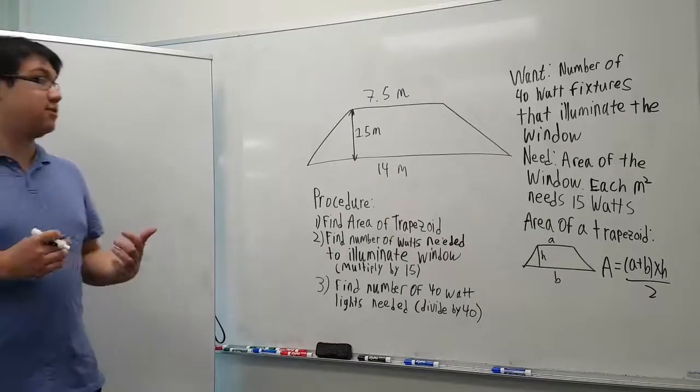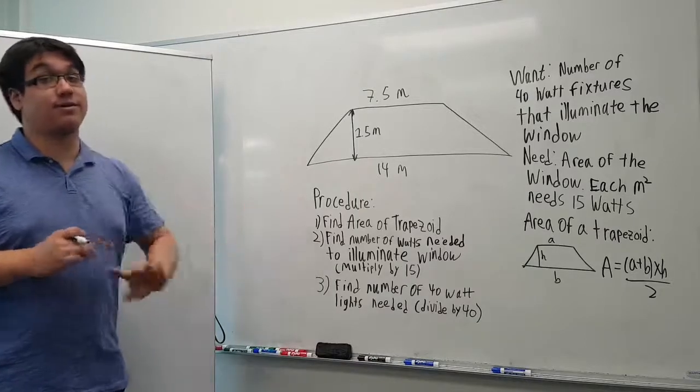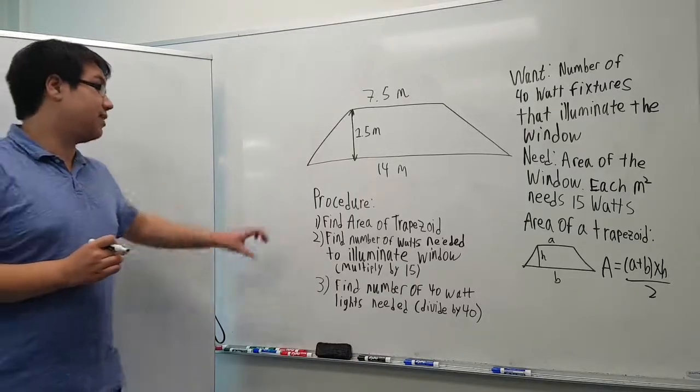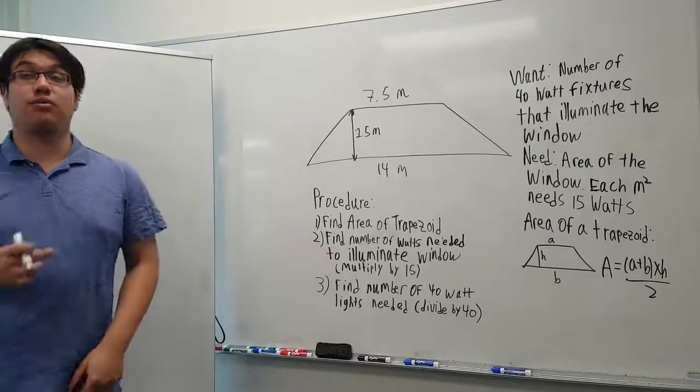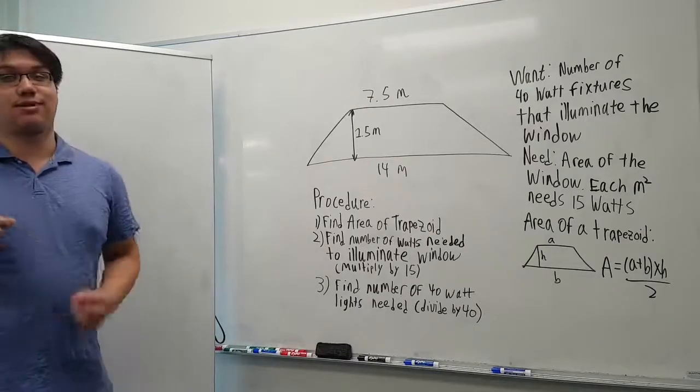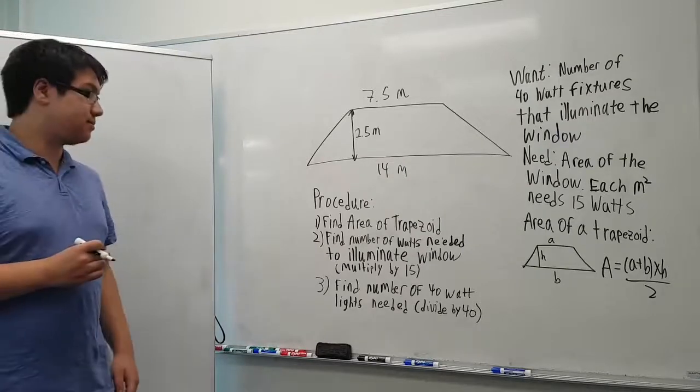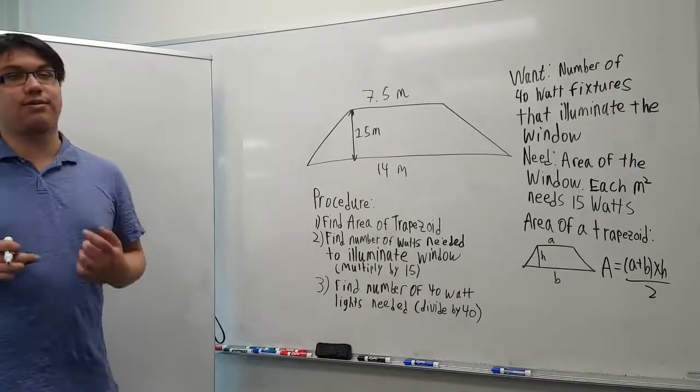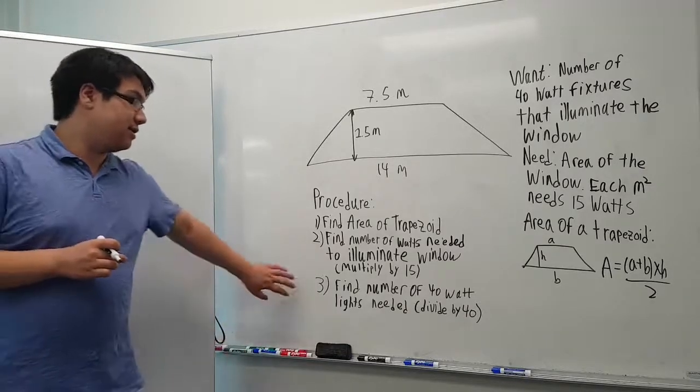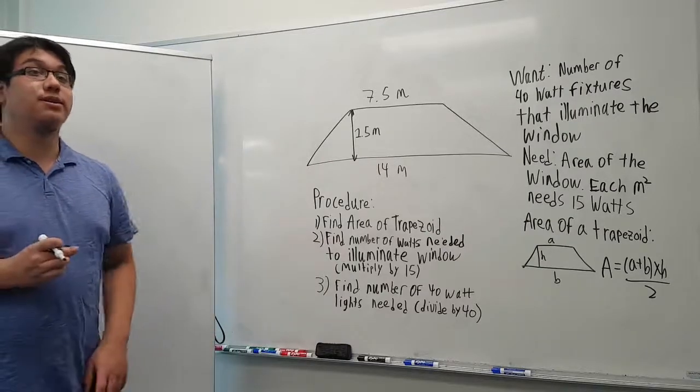I've broken down the procedure into several steps. First, we're going to find the area of the trapezoid. Next, we'll find the number of watts needed in total to illuminate the window by multiplying the area by 15 watts. Then we'll find the number of 40-watt light bulbs needed by dividing the total wattage by 40.